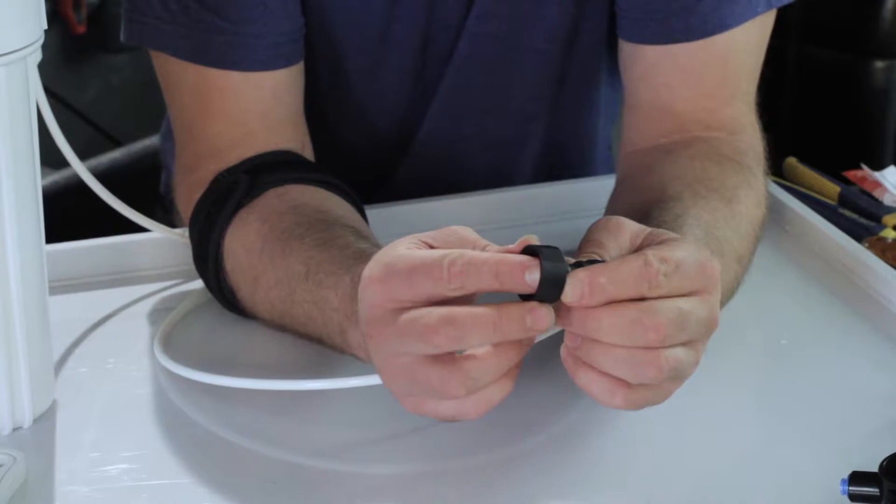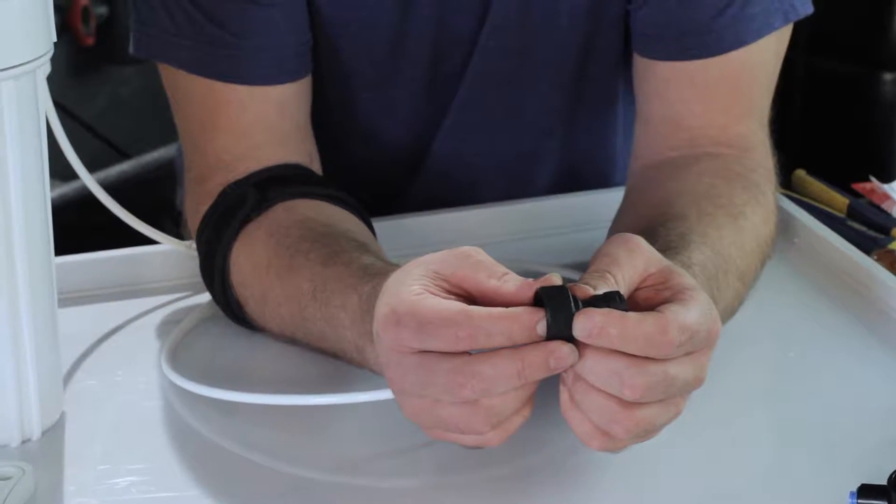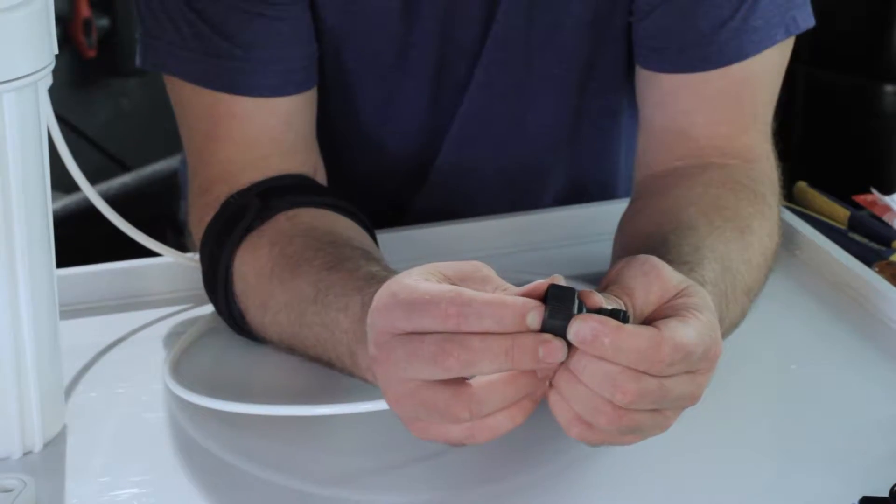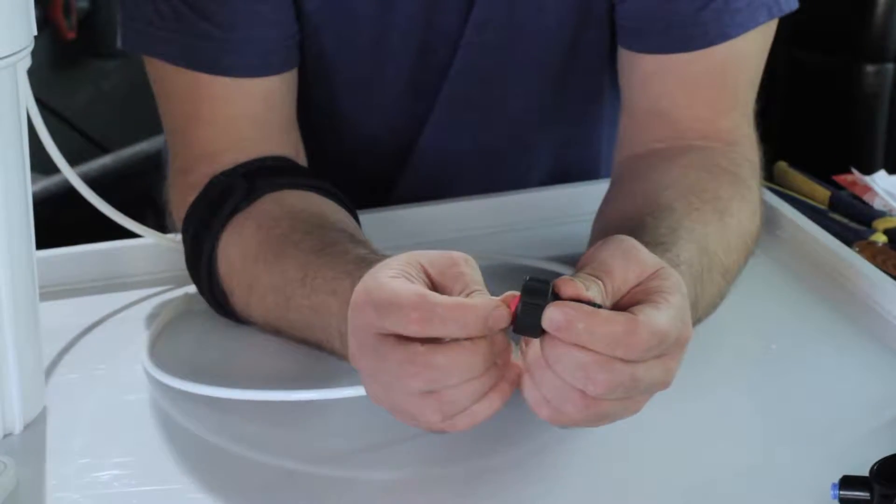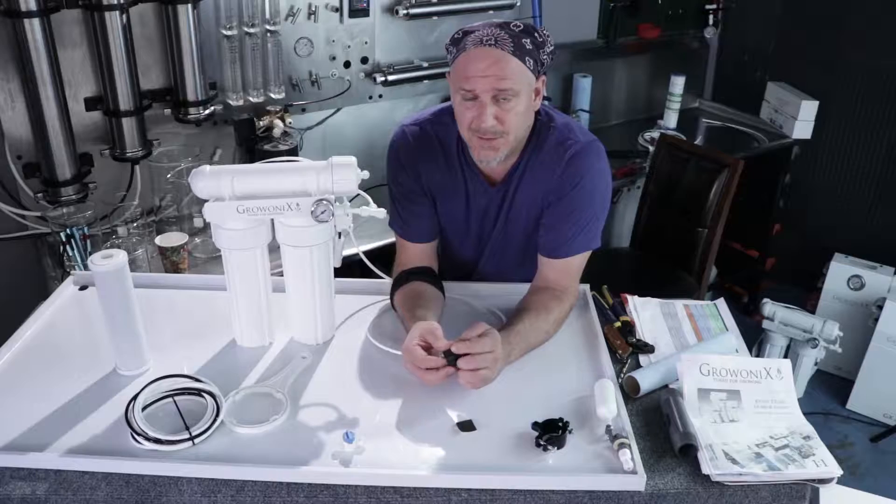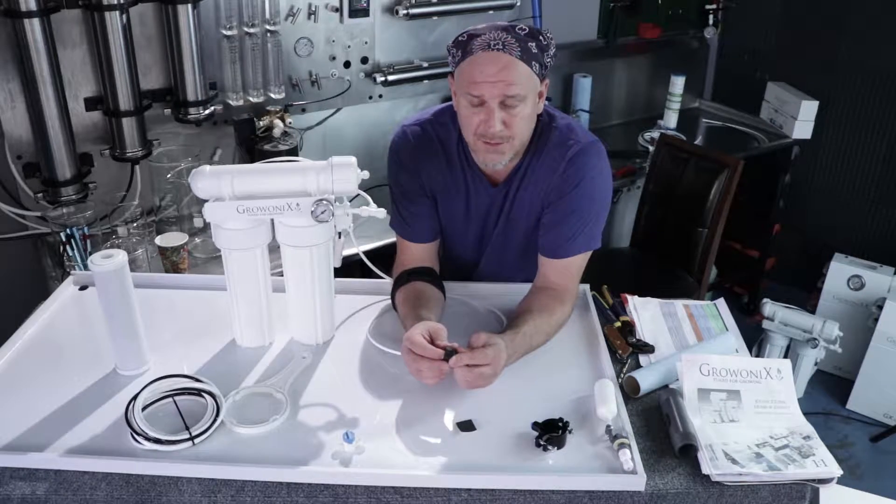Now we're going to plumb in the input feed water to this unit. We give you, with the unit, a garden hose adapter. We give you this because a lot of people request them. If you're in a pinch and you only have a garden hose, it's a good way to make water on the fly, especially if you're in a greenhouse or agricultural environment.